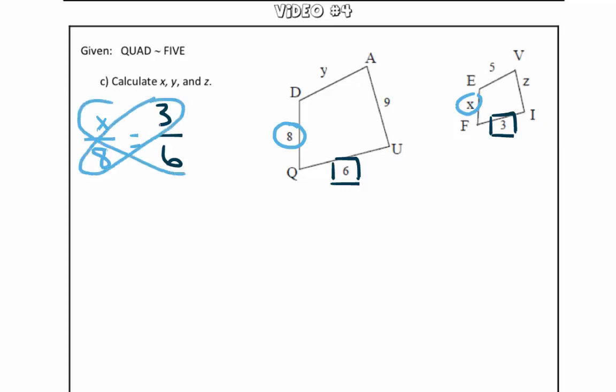So we are going to multiply 6 times x, so we get 6x, is equal to 8 times 3, which is 24. Divide both sides by 6, and we get that x is equal to 4.